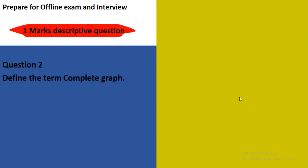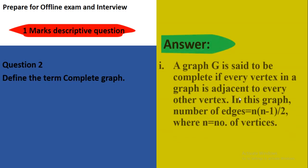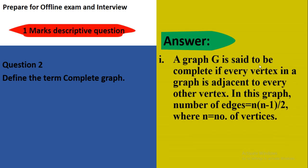Question number 2: Define the complete graph. A graph G is said to be complete if every vertex in a graph is adjacent to every other vertex. Keep in mind, every vertex in a graph is adjacent to every other vertex. In this graph, number of edges equals N into N minus 1 by 2, where N represents the number of vertices. Here is one vertex connected to this, then the second one, third one, and fourth one, similarly for other vertices.